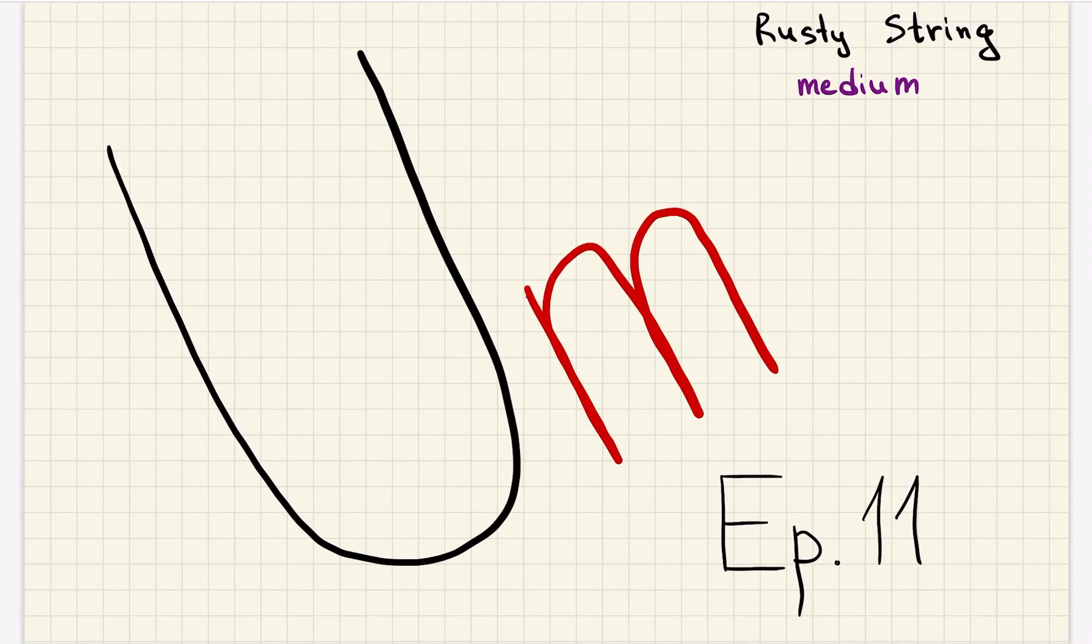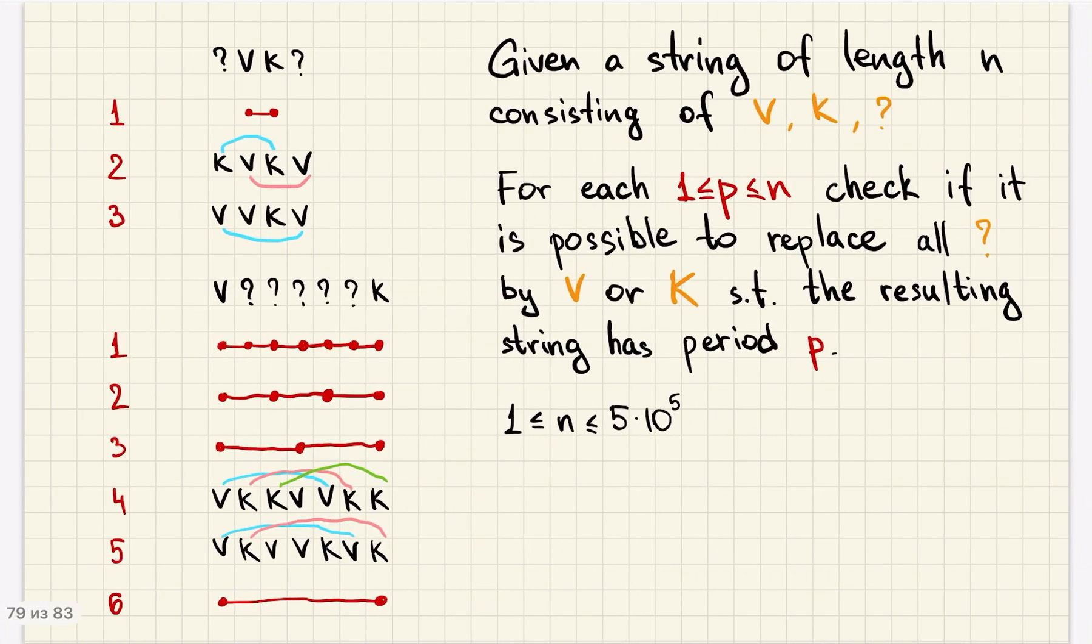Episode 11, rusty string. Let's recap the problem statement. We are given a string of length n consisting of characters v, k, and question marks.